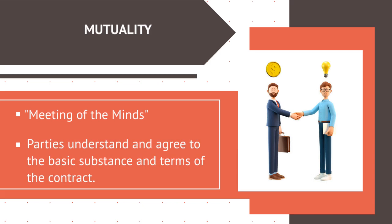When the complaining party provides proof that all of these elements occurred, that party meets its burden of making a prima facie case that a contract existed. For a defending party to challenge the existence of the contract, that party must provide evidence undermining one or more elements.